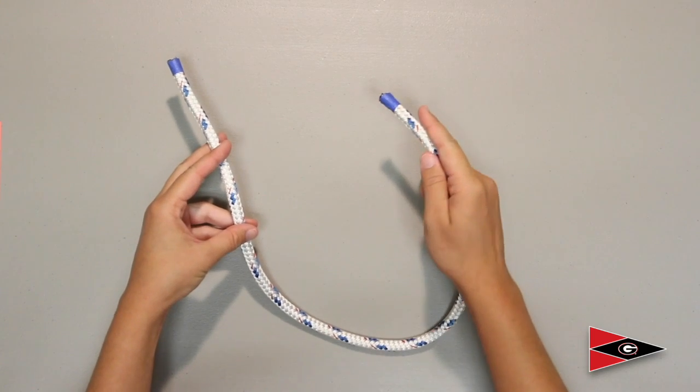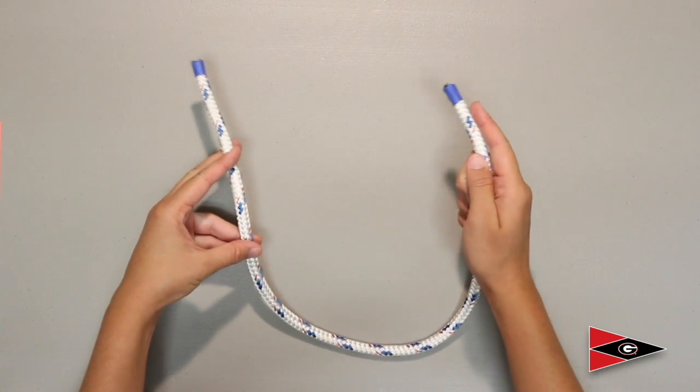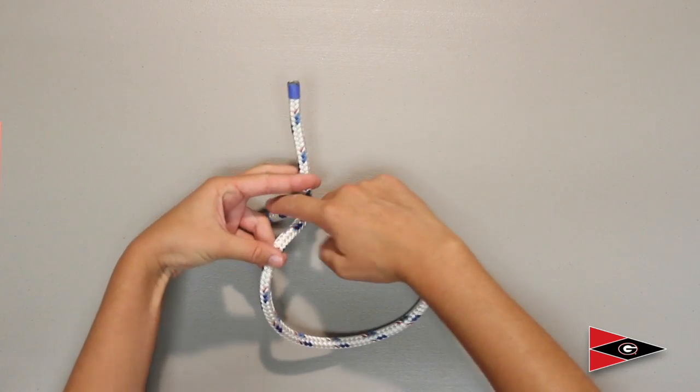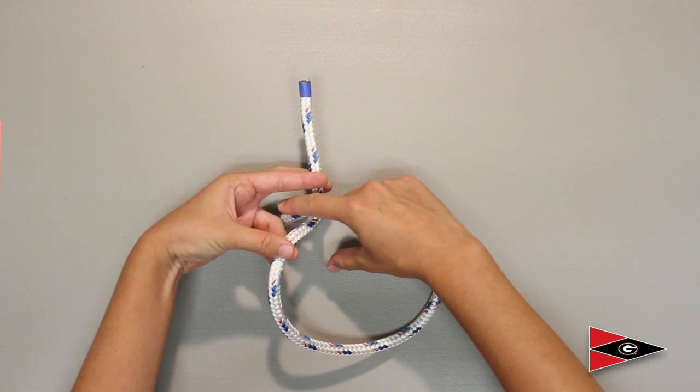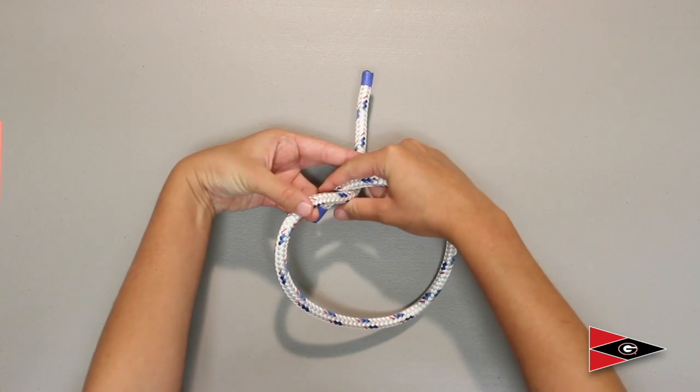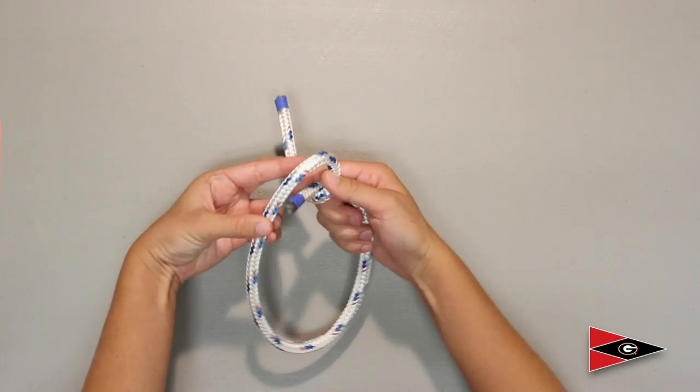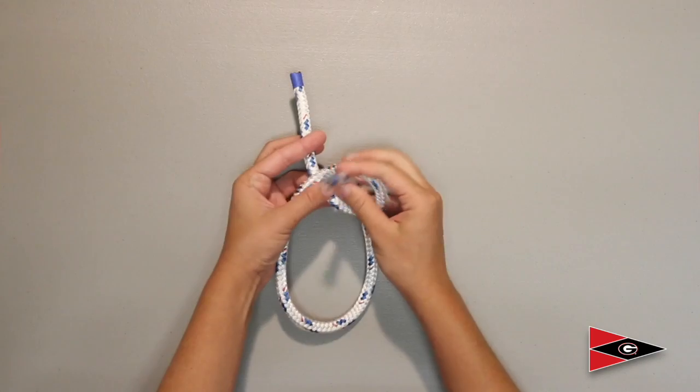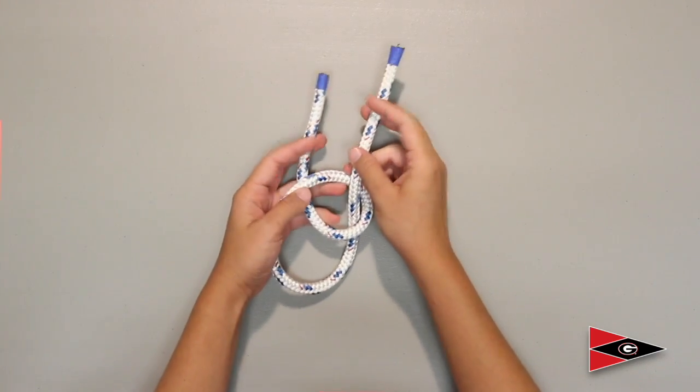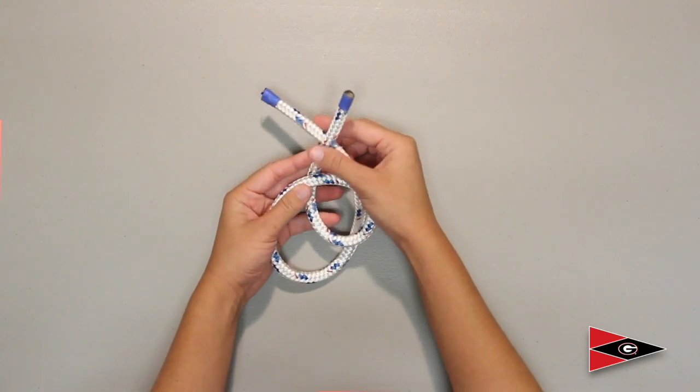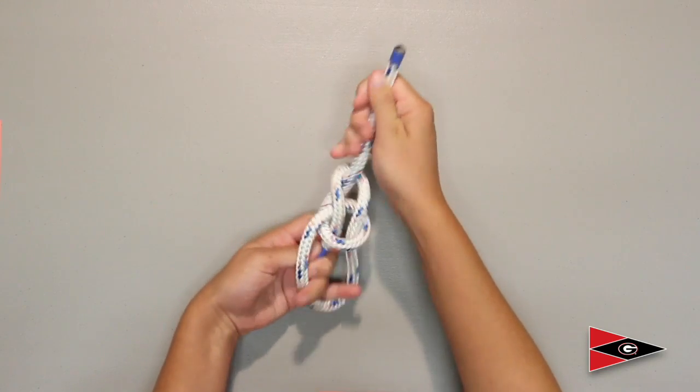Alright, we're going to do this again. Pointer finger in the dominant hand on one side, make your triangle on your non-dominant hand direct it through the triangle, but don't let your pointer finger leave it, and pinch it with your thumb where they intersect, and twist under, towards you, and up, letting it slide through those two fingers. Now take it around, behind, and back through the loop, and there's your bowline.